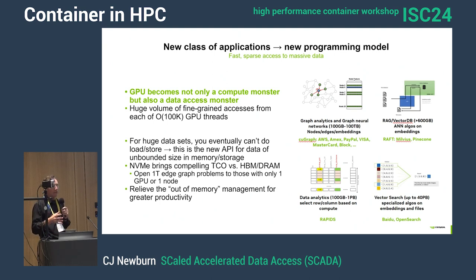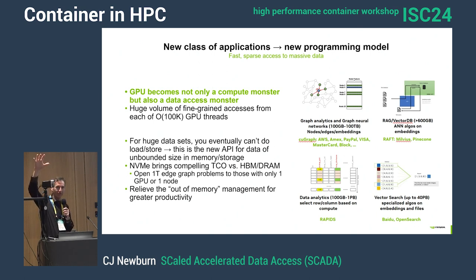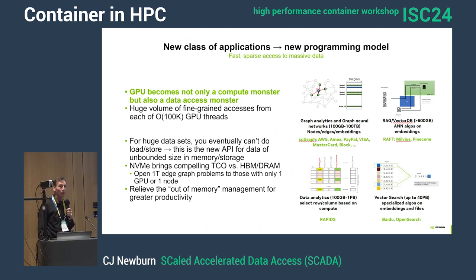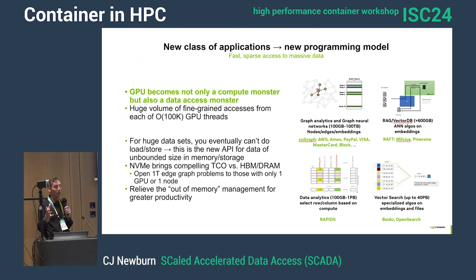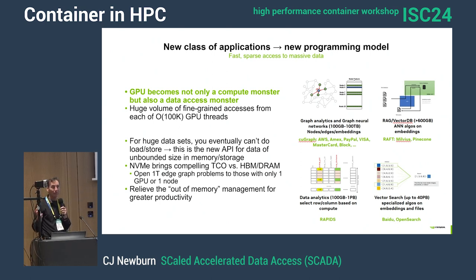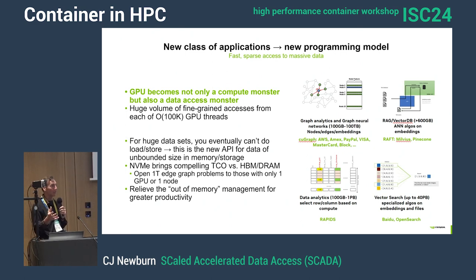For a huge dataset, you eventually can't do loads and stores because you just can't fit everything in local memory. And even though we're making GPUs that are the size of racks, you still can't necessarily fit your whole problem in there. Especially if you're not compute intensive, it's kind of a waste of money to buy a whole bunch of GPUs just for their HBM — that's expensive. It's much more cost-effective to use cheap NVMEs for a better total cost of ownership.